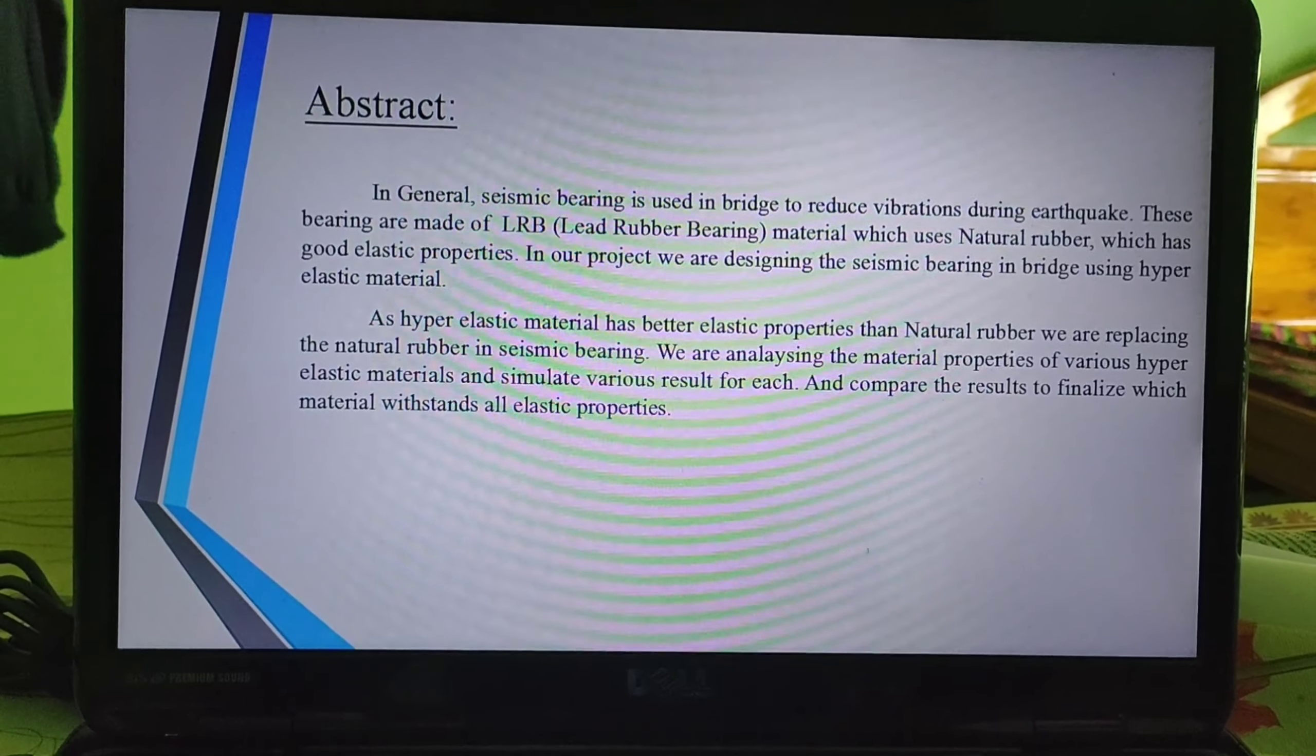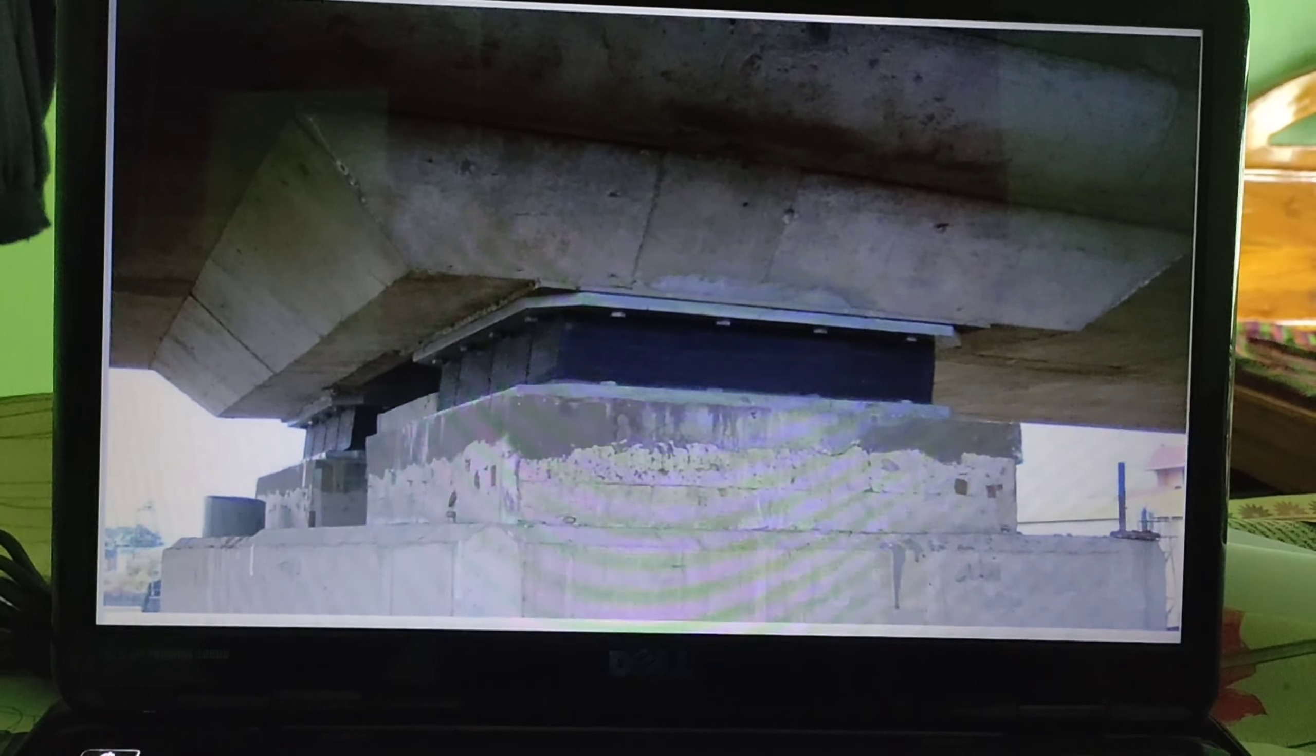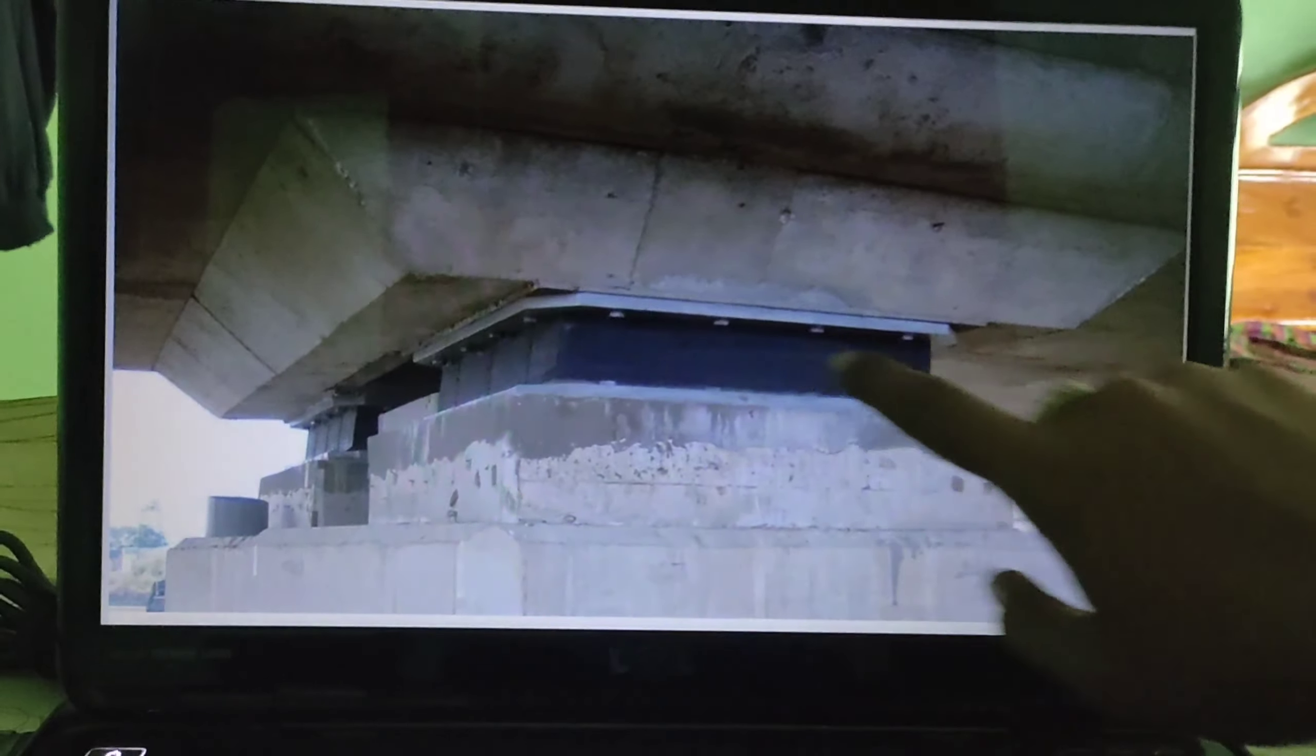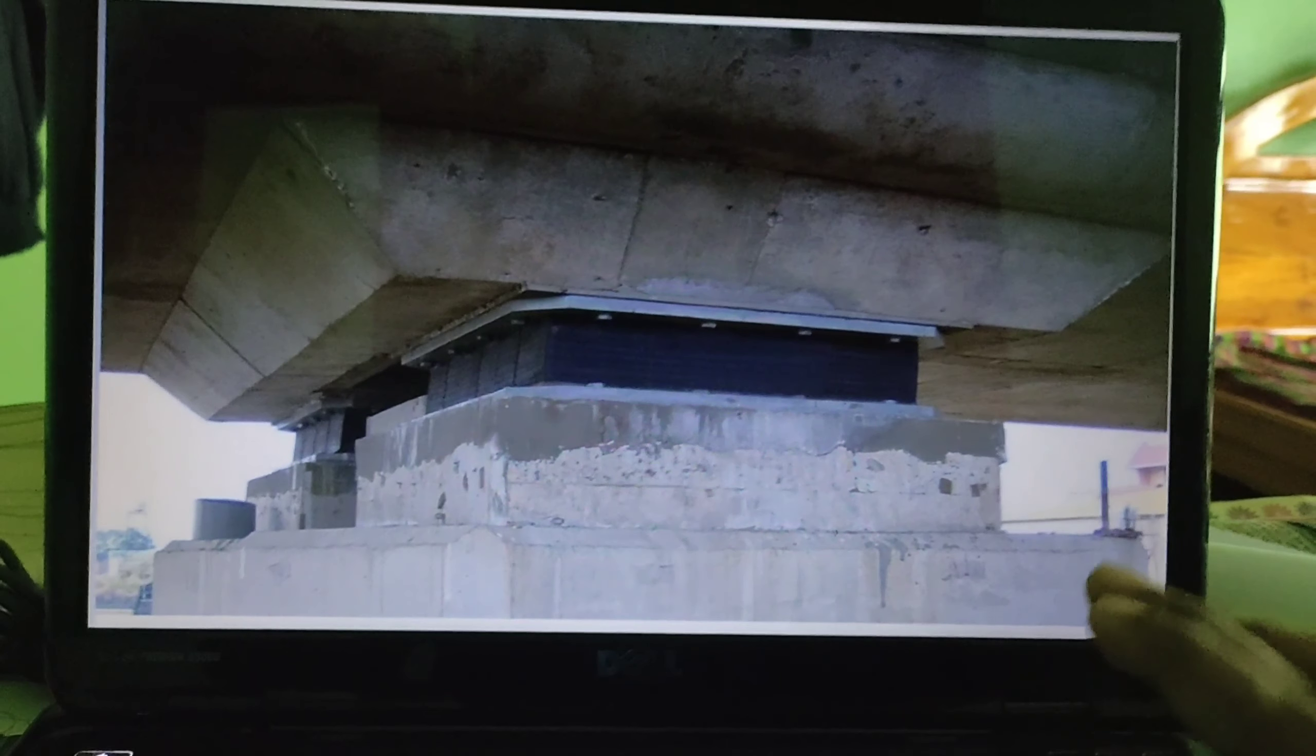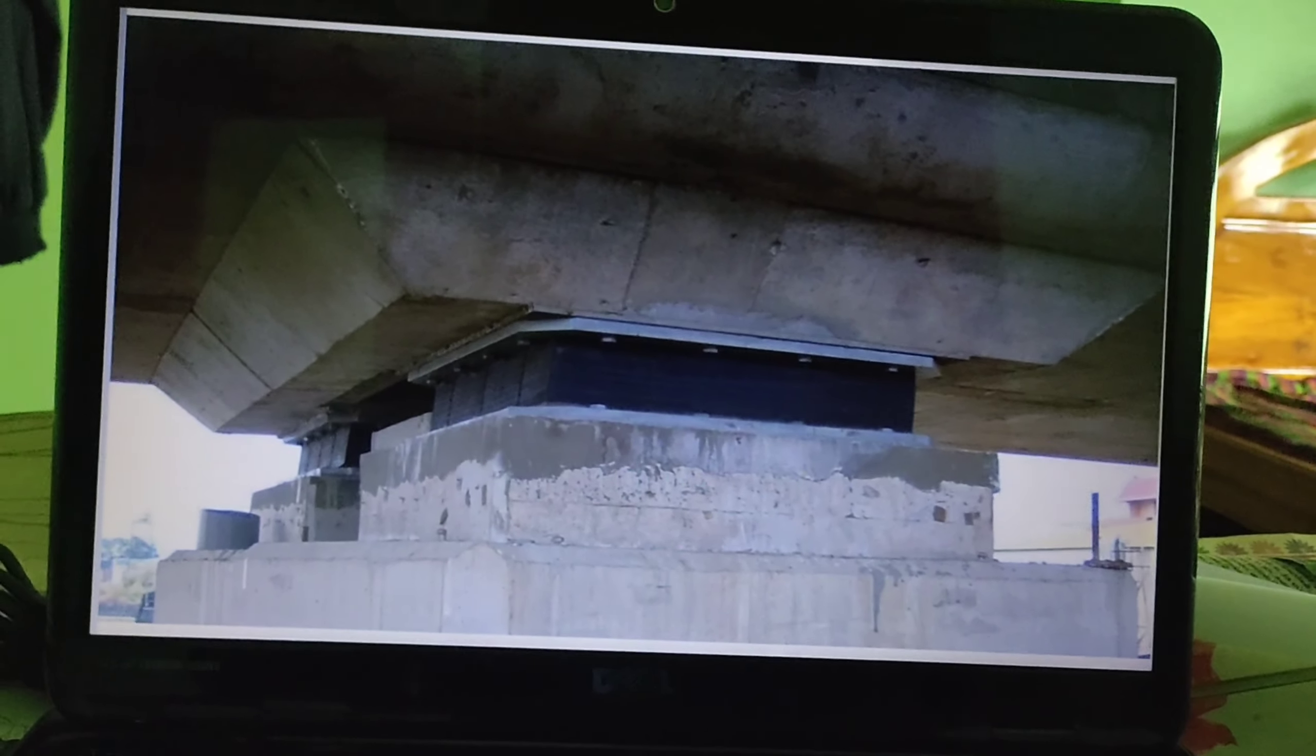Next we go to the next page. The abstract is making a lead rubber bearing to reduce the vibrations during earthquake. This is the image of the design. Here we see that the bridge, the upper edge and the lower edge. This is the seismic bearing infiltrated here. The seismic bearing is used to reduce the vibrations. If a vibration occurs like earthquake or any natural disasters, the vibration occurs, it will move apart. It will jerk.